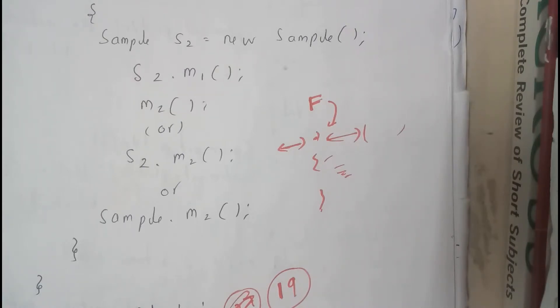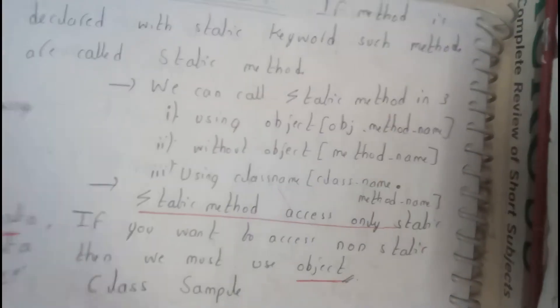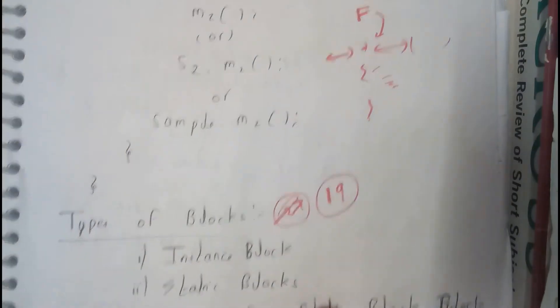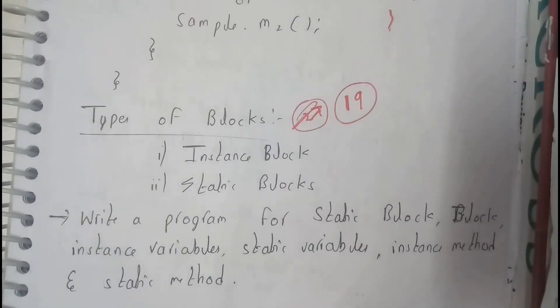That is all about the three different methods: instance, static, and final. I hope everyone got a clear idea on this. In the next tutorial, we'll be going through types of blocks. Let us meet in the next tutorial.